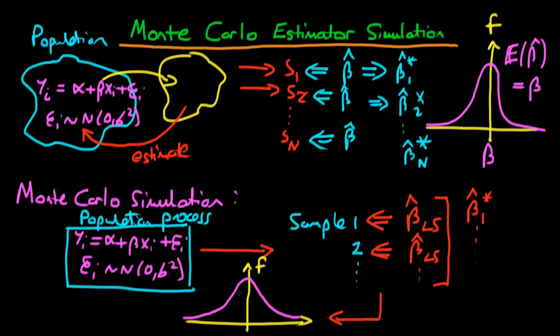The key difference here is that we actually know the parameter we're trying to estimate — we know the exact value of beta. So if we find that the sampling distribution is centered around the actual value of beta, we conclude that our estimator is perhaps unbiased. It also allows us to examine other properties: not only unbiasedness but also how the variance compares to other estimators. For example, instead of least squares we could use GLS on each of these samples and compare which has a higher variance.